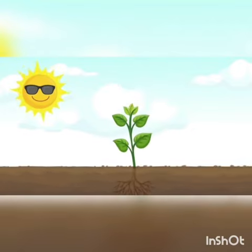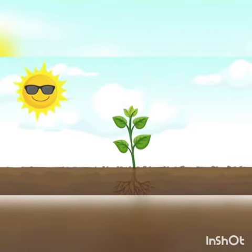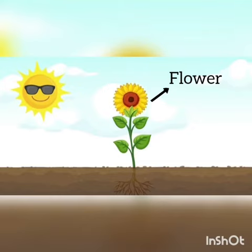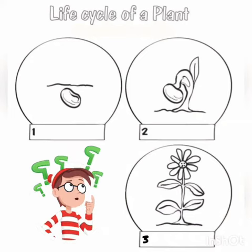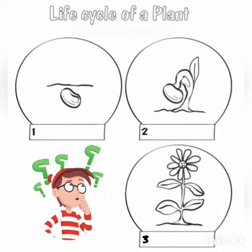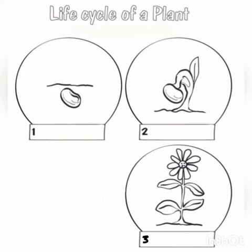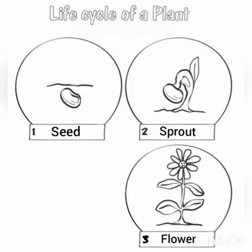And the last stage is the plant with a flower. It is the most beautiful part of the plant. It's usually colorful. So, the life cycle of a plant is seed, sprout and flower. Thank you.